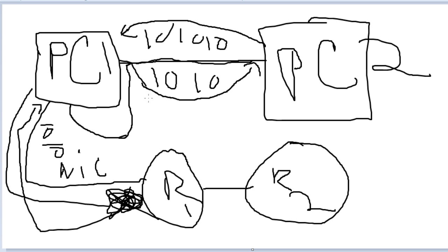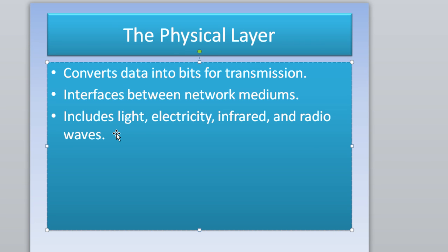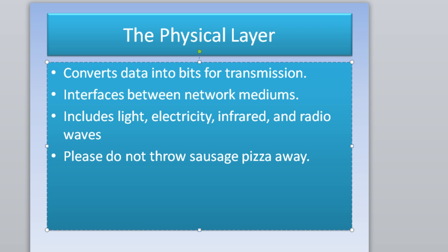In my next couple of CCNA tutorials, we'll be covering each layer of the OSI model. Today we covered the Physical layer, and the next tutorial will cover the Data Link layer. Also, I want to give you guys an easy way to remember the OSI model layers — the mnemonic is: 'Please Do Not Throw Sausage Pizza Away.'